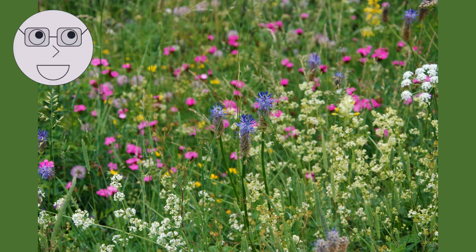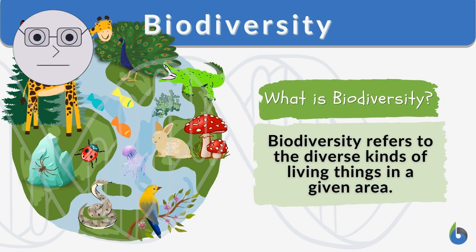Species diversity refers to the variety of species that exist on earth. It is the most commonly recognized form of biodiversity and is often used as a measure of the health of an ecosystem. The more species that exist in an ecosystem, the more stable and resilient it is. The visuals show examples of different species such as birds, fish and insects.